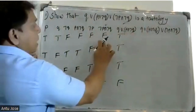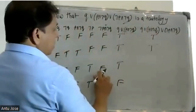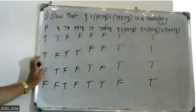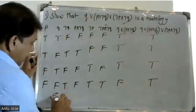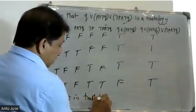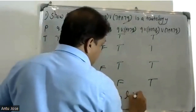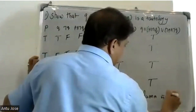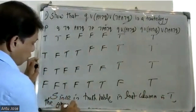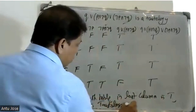Q or P and negation Q and negation P and negation Q. Here we get T value, here we get T value, here we get T value, here we get T value, here we get T. Since in the truth table, the last column is T, last column is T, therefore the given formula is tautology.